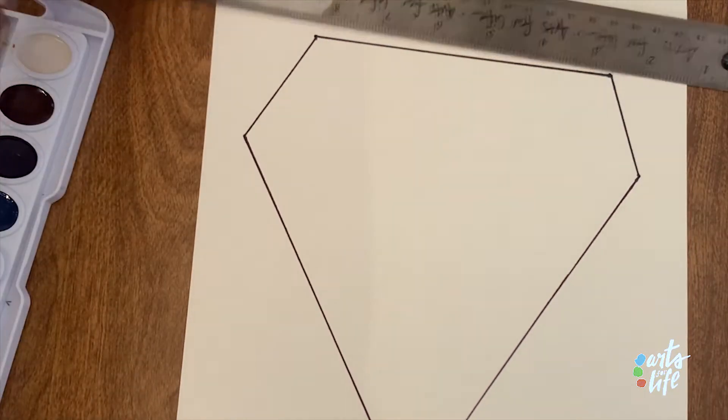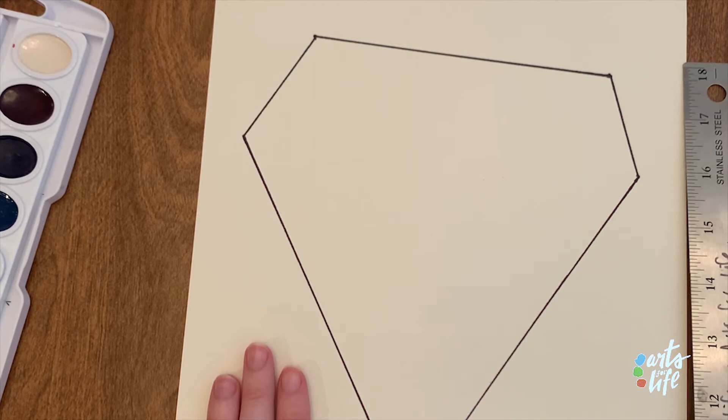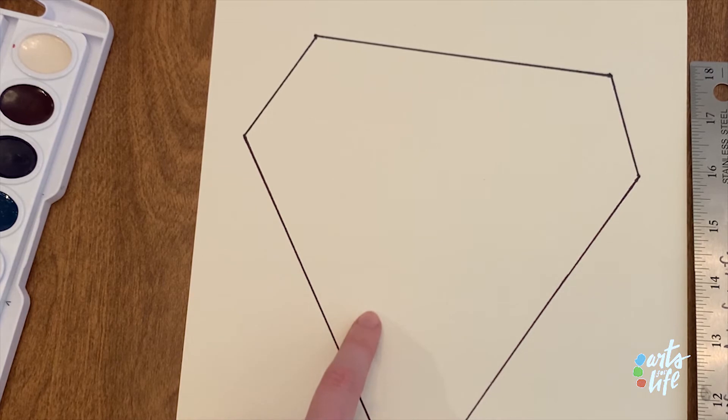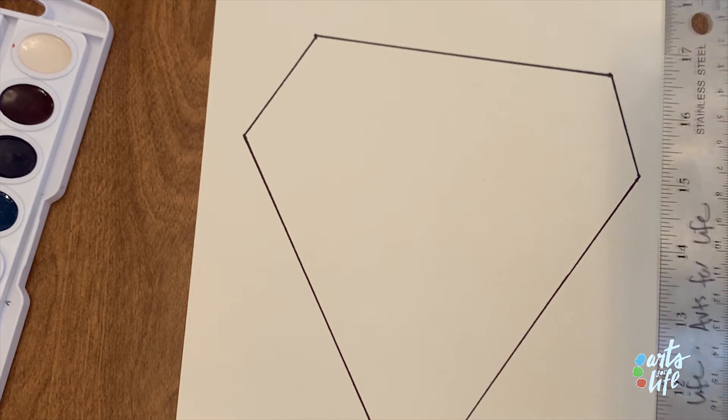All right, so we've got the basic outside shape of our gemstone. So now we're going to fill up the inside with different lines, all straight lines using our ruler or our sheet of paper.